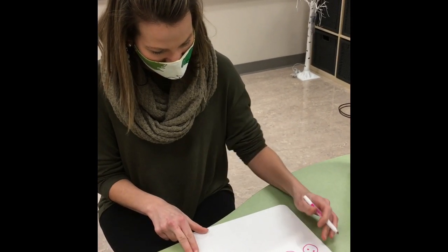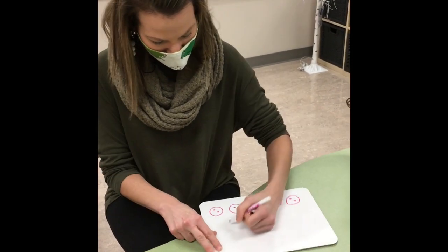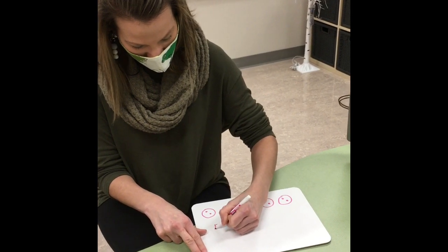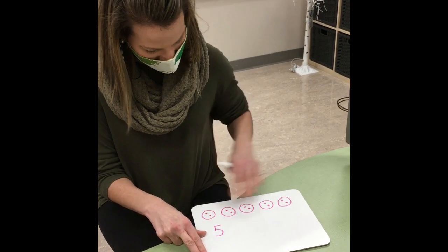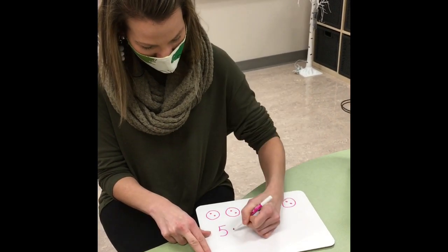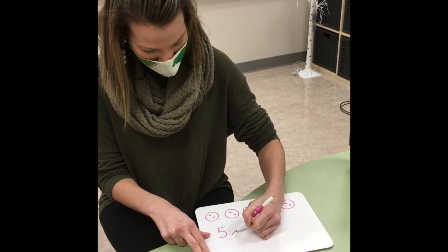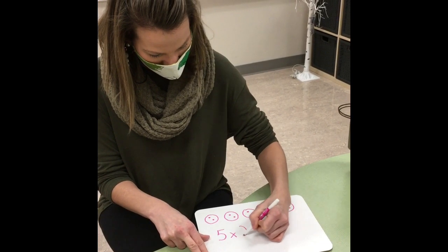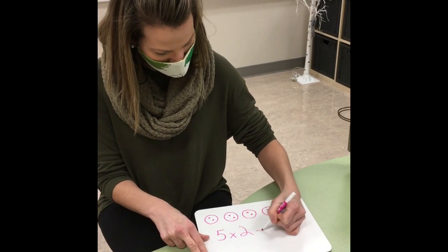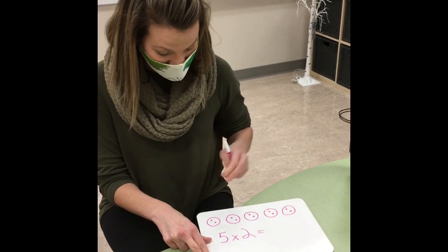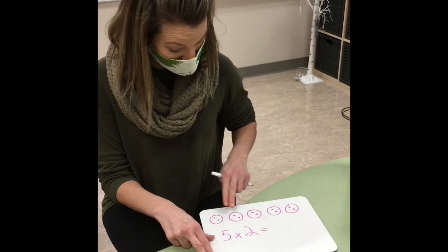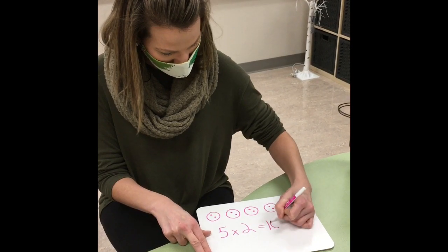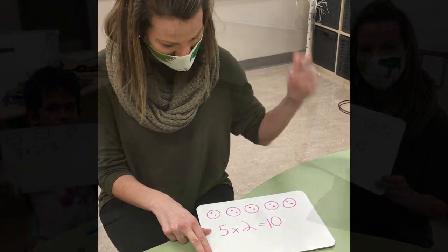Can you now write that as a multiplication equation for us? So that would be five equal groups of two equals — and I can figure out two, four, six, eight, ten. I just skip counted. And ten is my product.